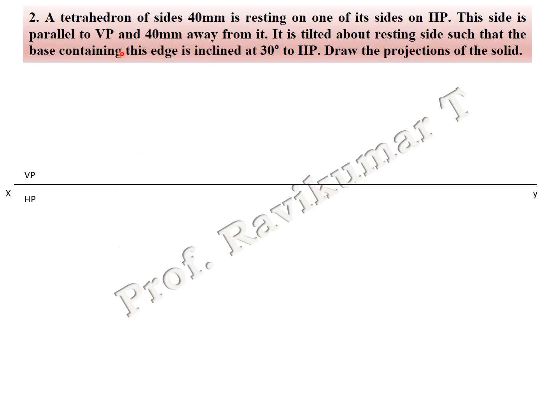Next tetrahedron problem: 40 mm sides rest on an edge on HP. Previously we placed a corner; here we have to place the edge side on HP. This side is parallel to VP and 40 mm away from it — that is the final position. First we will see the first position. Next, it is tilted about the resting side such that the base containing the edge is inclined 30 degrees to HP. Draw the projection.